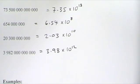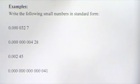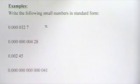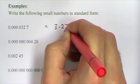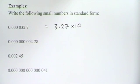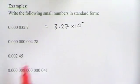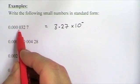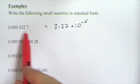We can apply a similar method to writing very small numbers in standard form. These numbers are all less than 1. This first number must have a number between 1 and 10, so it's 3.27. Since this number is much smaller, we're actually dividing by 10, which we signify with a negative power. The decimal point has moved 5 places, so it's 3.27 times 10 to the minus 5.